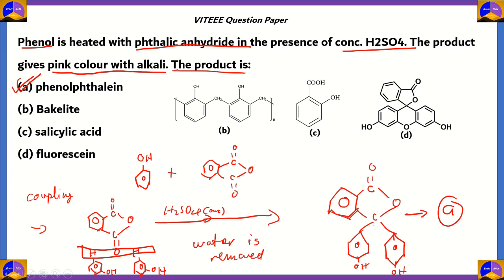There was another clue that would have led you to phenolphthalein: the product gives pink color with alkali. When we studied acid, bases, and salts in grade 10, you would know that phenolphthalein is the indicator which turns pink with alkali, and we also use it in grade 12 when titrating with KMnO₄. So option A is the correct answer. Phenol plus phthalic anhydride gives you phenolphthalein.